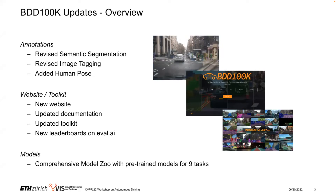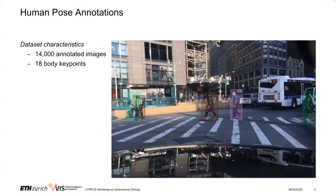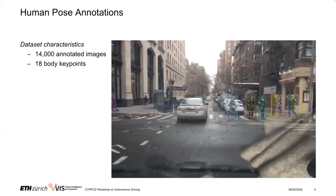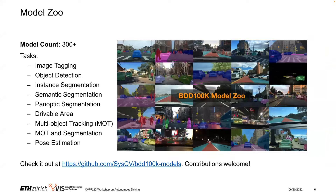We now have a very comprehensive model zoo with pre-trained models for nine tasks. We annotated 14,000 images with 18 body keypoints for all pedestrians visible in those images, so if you're working on human pose, definitely check it out. The new website lets you explore the data and labels, find documentation, links to leaderboards, model zoo, the toolkit, and a discussion forum. We now have more than 300 models in this model zoo, comprising all of the tasks. Contributions are also very welcome.